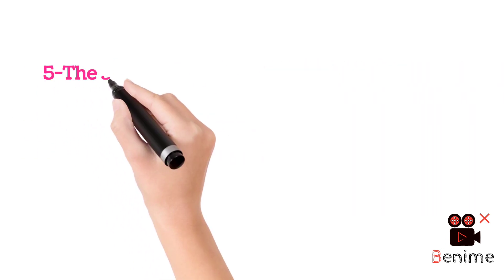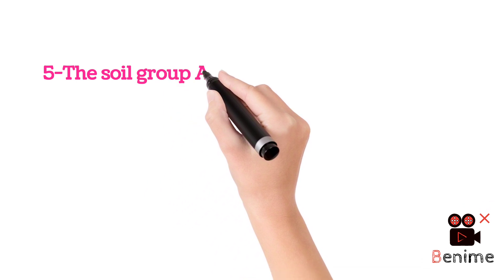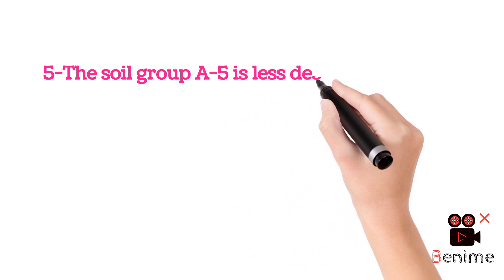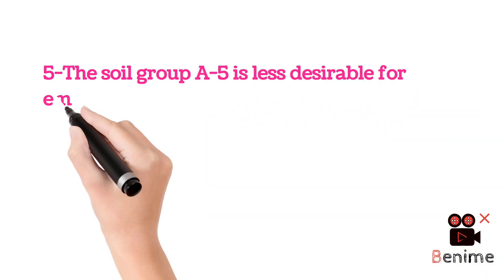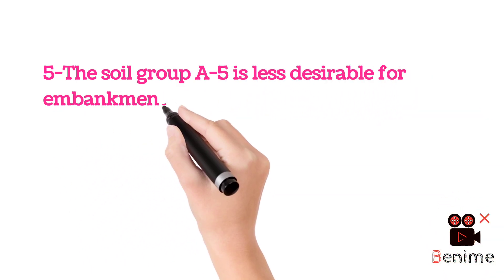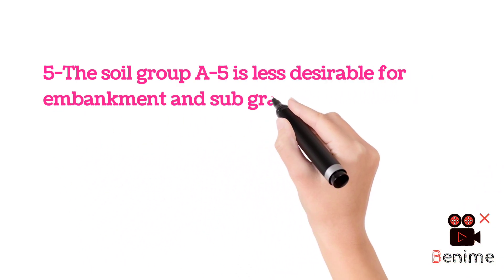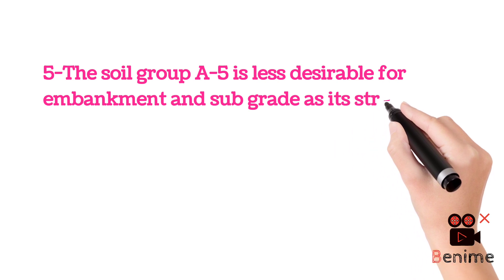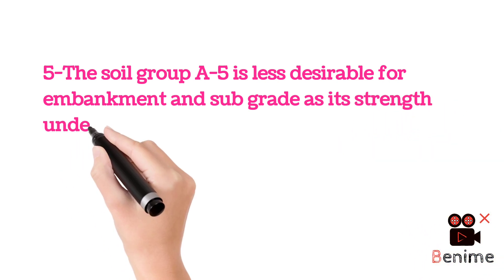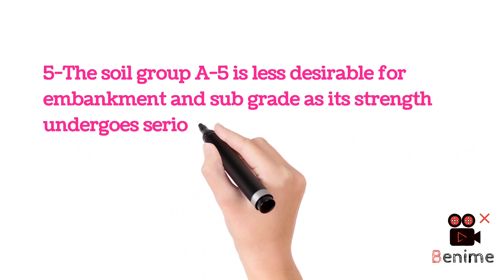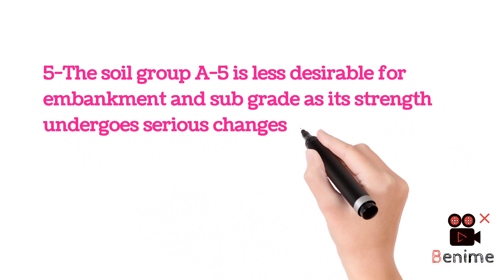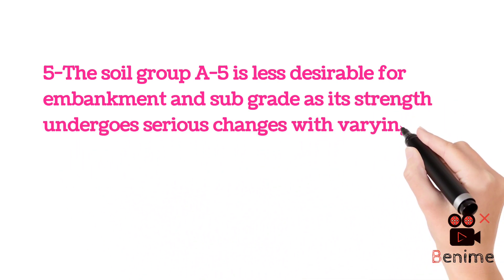Point 5: The soil group A5 is less desirable for embankment and subgrade, as its strength undergoes serious changes with varying moisture content.